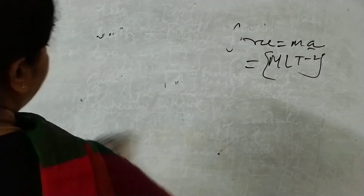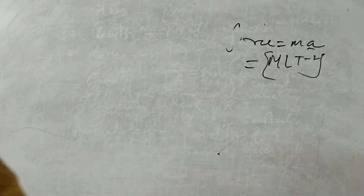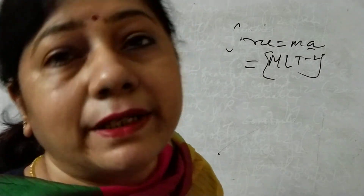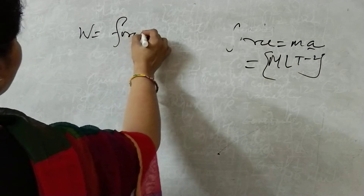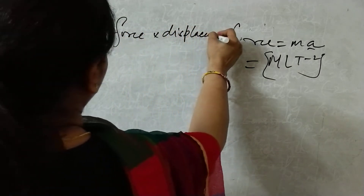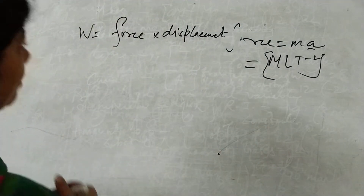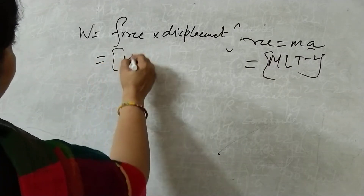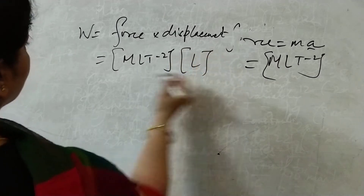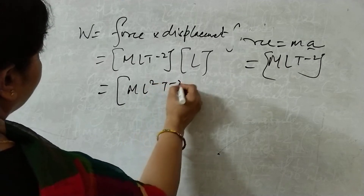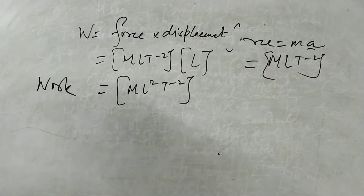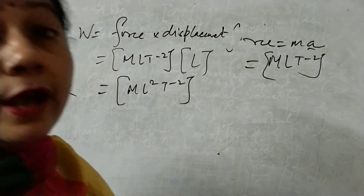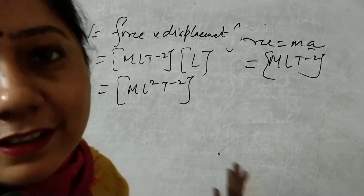What is very important is that you should know the basic formulas. Now for work done, W = force × displacement. Force is MLT⁻² and displacement is L, so altogether we get ML²T⁻². This is the dimensional formula for work. For kinetic energy and potential energy, the same formula applies.